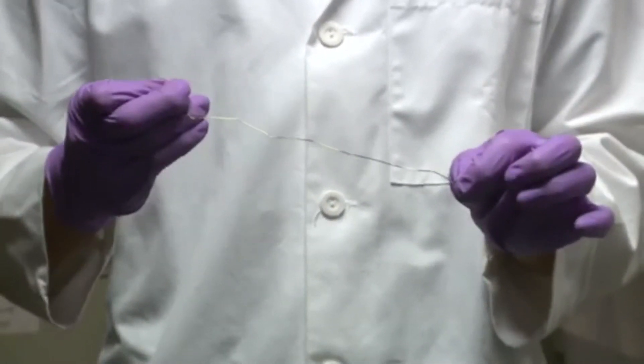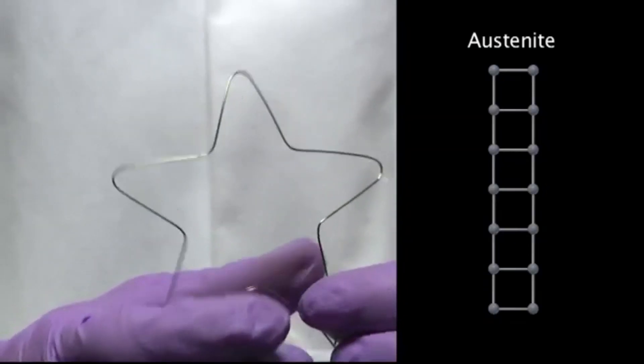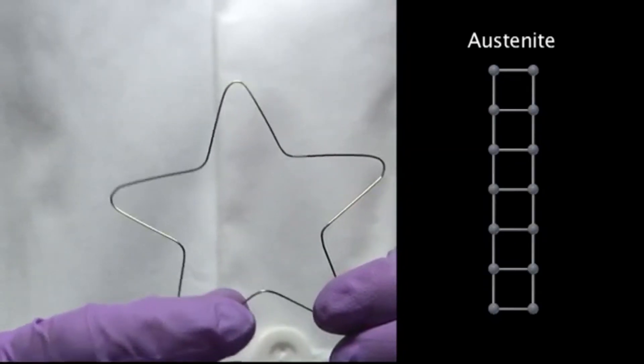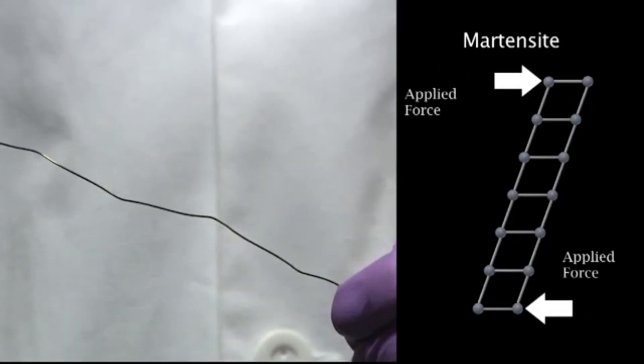This also works because of phase transformations. This material is a slightly different composition, so that at room temperature, it is in the austenite phase. If we stress the material, we can force it into the martensite phase, and this will change the shape.